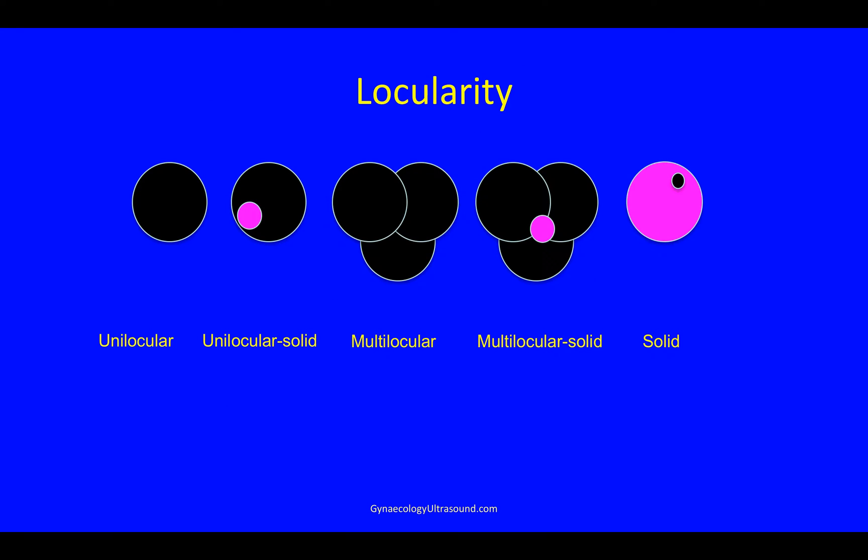In locularity, a cyst can either be unilocular — that is a single locule — or there might be a little bit of solid material present, in which case it's called unilocular solid. It's a very important distinction between unilocular and unilocular solid, as you'll see later. If there is more than one locule, the cyst is described as multilocular, and if there's also some solid material present, it is now called multilocular solid.